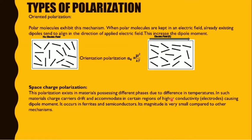Now for orientation polarization: polar molecules exhibit this mechanism. When polar molecules are placed in an electric field, already-existing dipoles tend to align in the direction of the applied electric field. When there is no electric field, dipoles point in different directions; when an electric field is applied, all the dipoles align on that side. The orientation polarizability αₒ equals μ²/kT, where μ is the dipole moment.